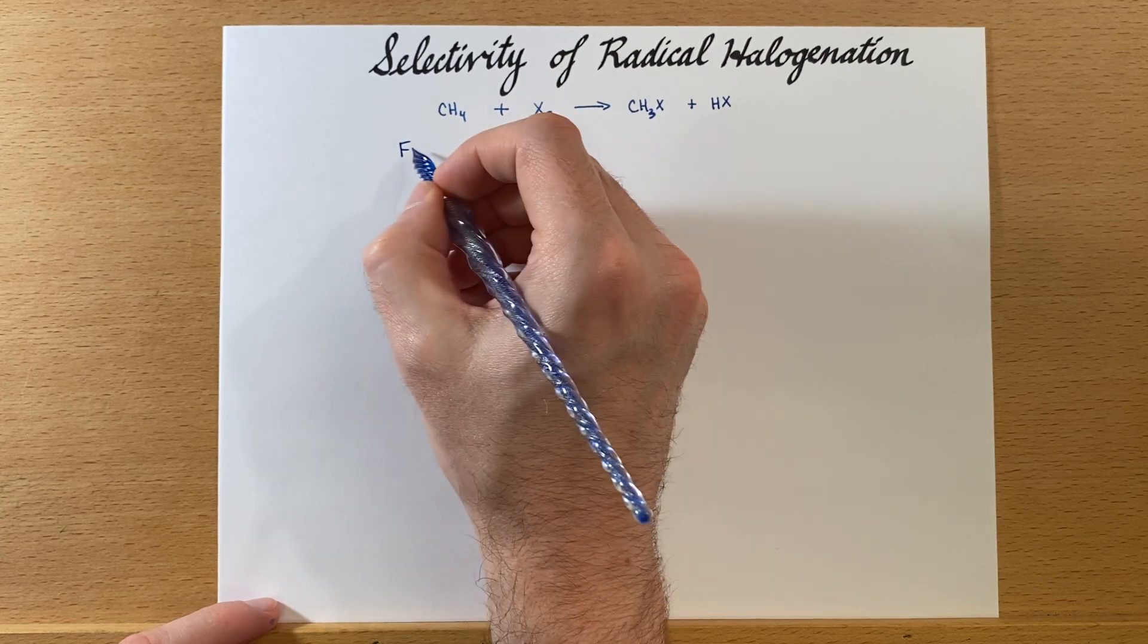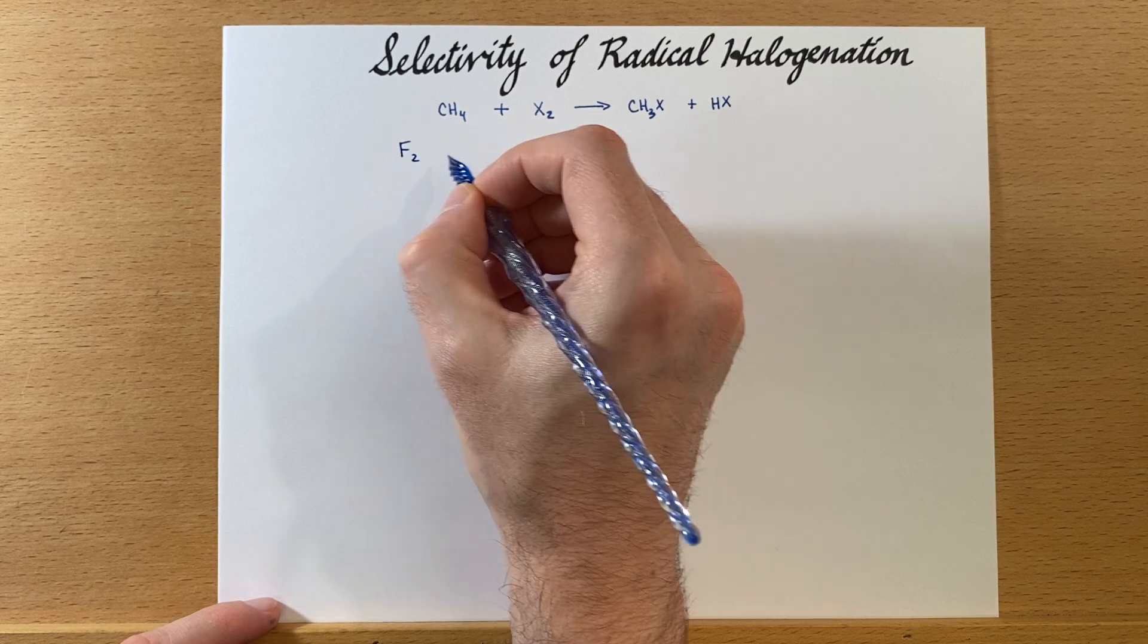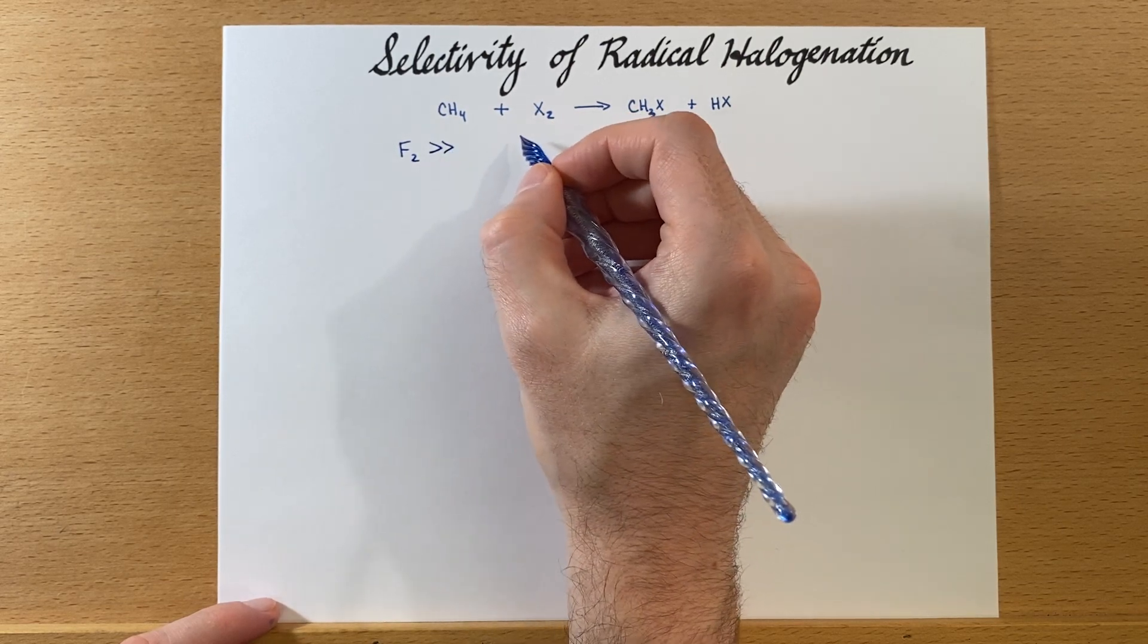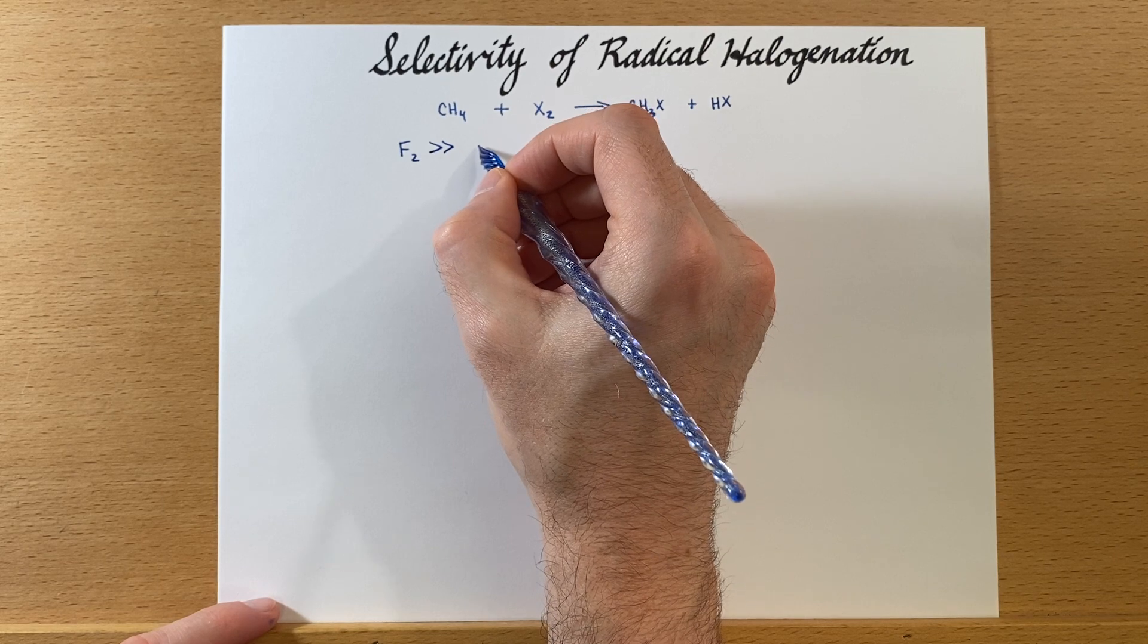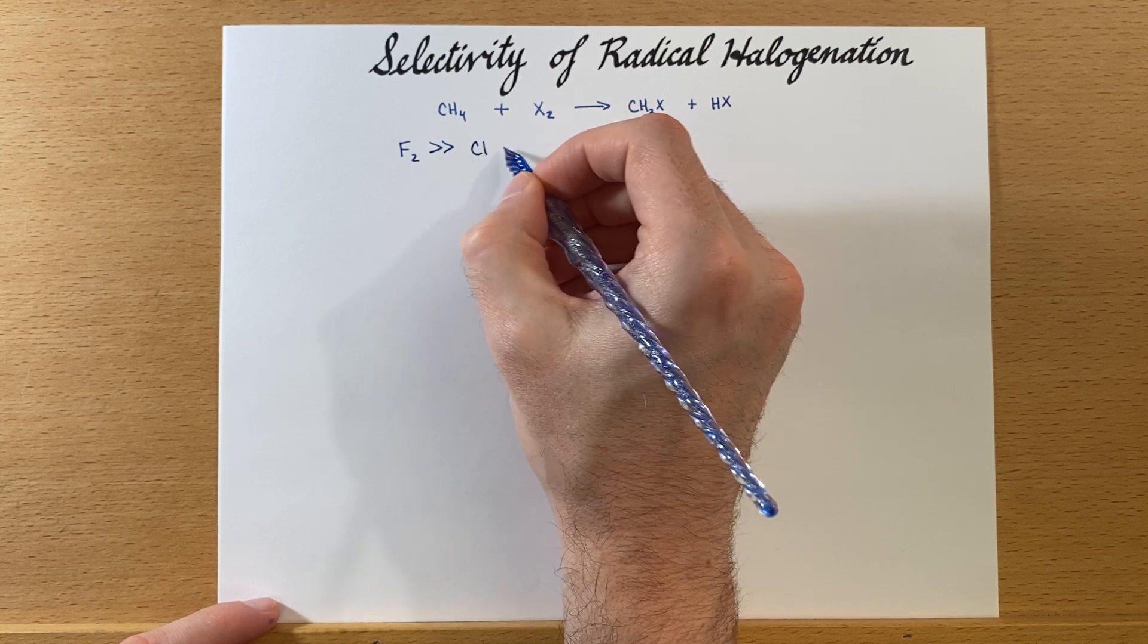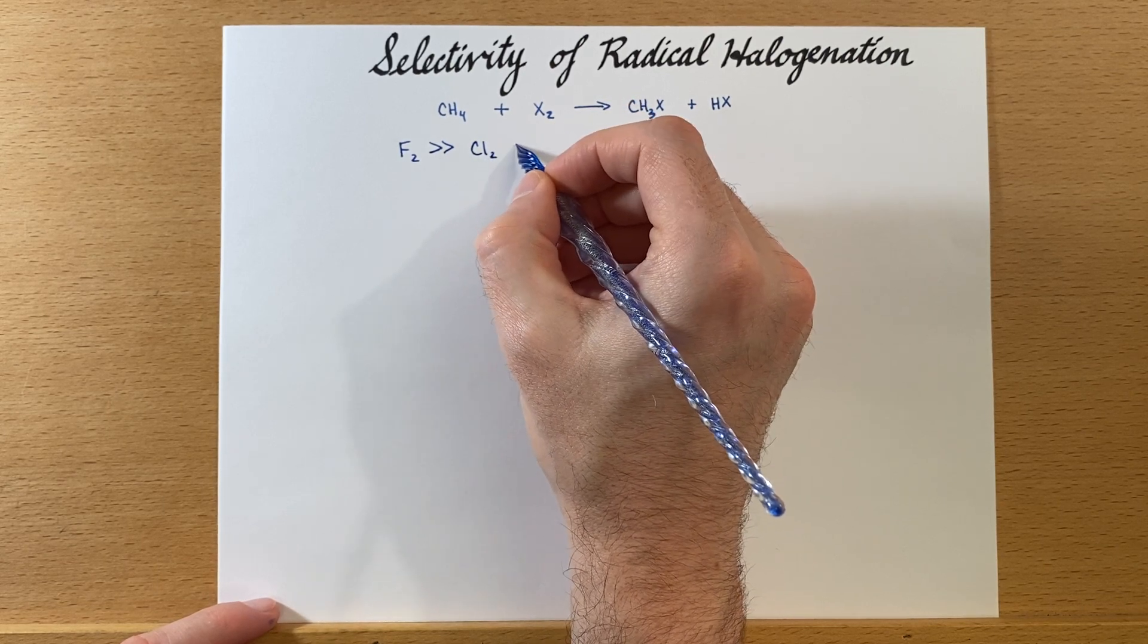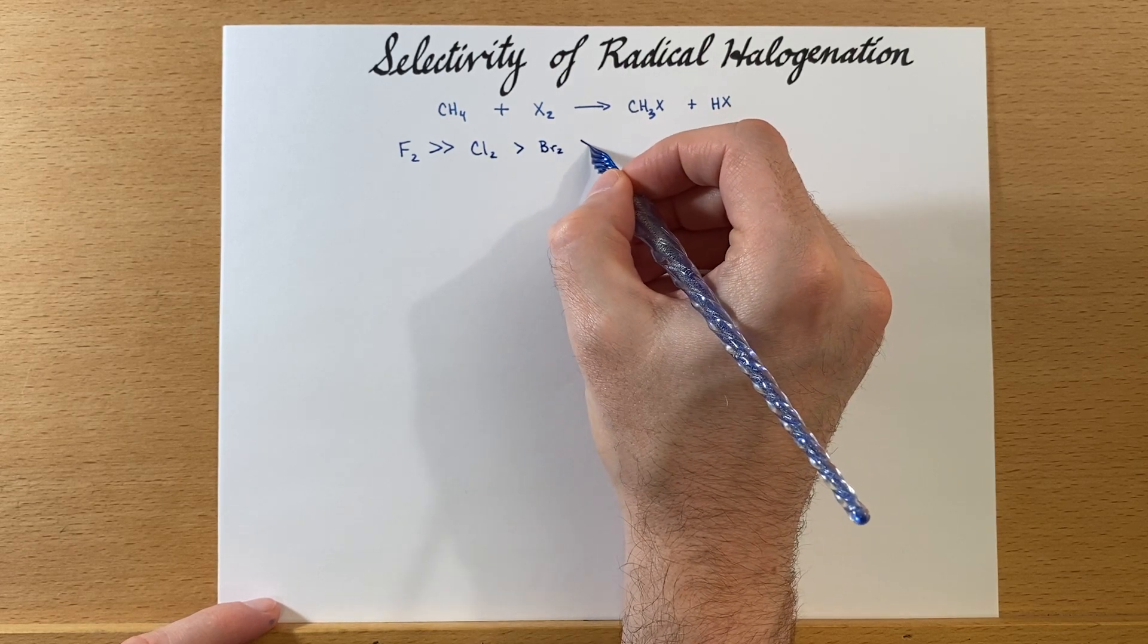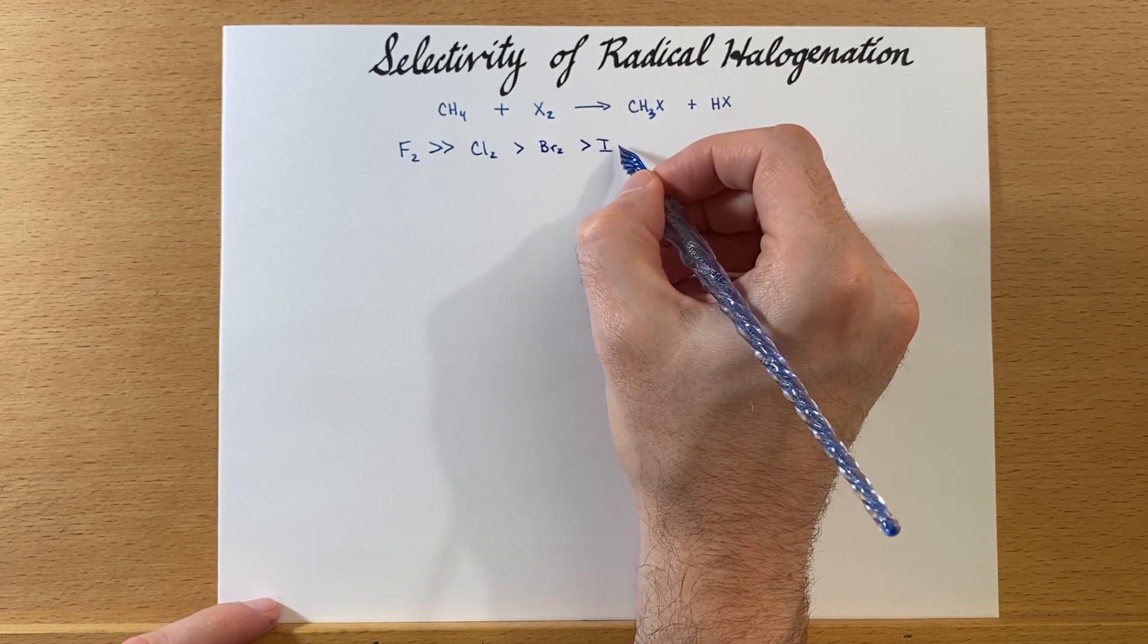The reactivity of these is as follows: fluorine is very reactive, and then chlorine is a little less reactive, followed by bromine, followed by iodine.